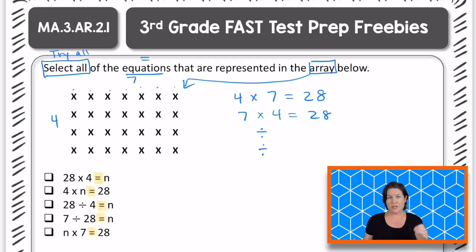So for division, we need the dividend first, the total first. And how many x's did we have in all? 28, right? So our dividend for both of these is going to be 28. Now we can make it 28 divided by 4 or 7, right? Let's go ahead and do 4. 28 divided by 4 equals 7. And 28 divided by 7 equals 4. You got it.